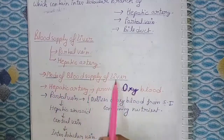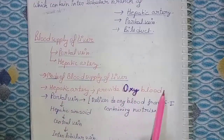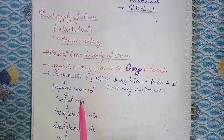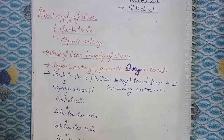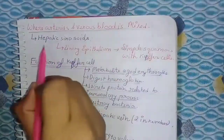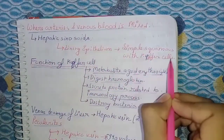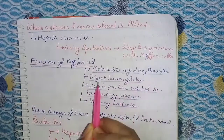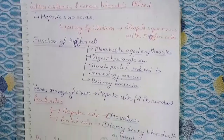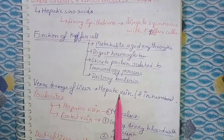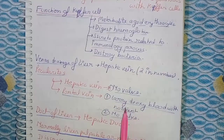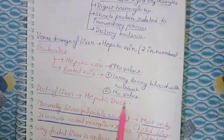Blood supply of the liver: portal vein and hepatic artery. The hepatic artery provides oxygenated blood. The portal vein delivers deoxygenated blood from the small intestine containing nutrients. Flow: portal vein → hepatic sinusoid → central vein → interlobular vein → sublobular vein → hepatic vein → inferior vena cava, where arterial and venous blood is mixed. The lining of hepatic sinusoids is simple squamous epithelium with Kupffer cells. Functions of Kupffer cells: metabolize aged erythrocytes, digest hemoglobin, secrete proteins related to immunological processes, and destroy bacteria. Venous drainage of the liver is through the hepatic veins. Peculiarity: hepatic veins have no valves, and the portal vein also has no valve.